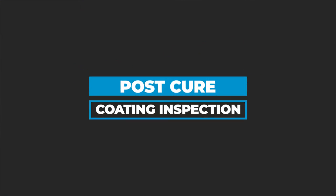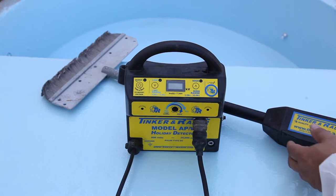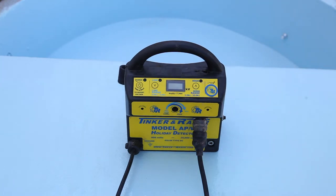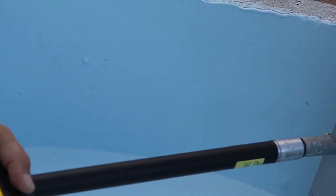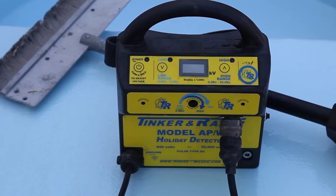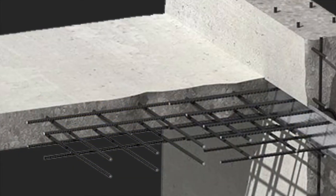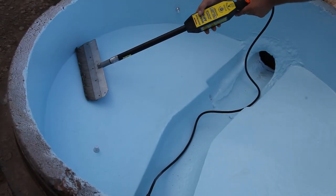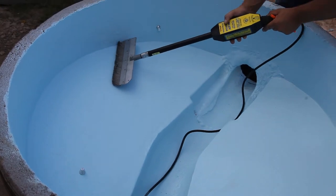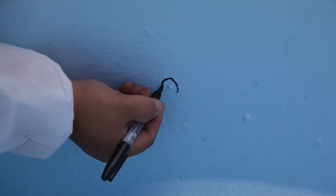Inspection for holidays or pinholes can be done both visually, and with the aid of a high voltage holiday tester. Holiday testing is performed in accordance with ASTM D4787 with a holiday tester like this. Tinker and Razor uses high voltage current to connect with the reinforcing steel in the structure when a pinhole or holiday is detected. An audible sound and visual spark alert the operator to the presence of a pinhole or an area where the coating may be too thin.